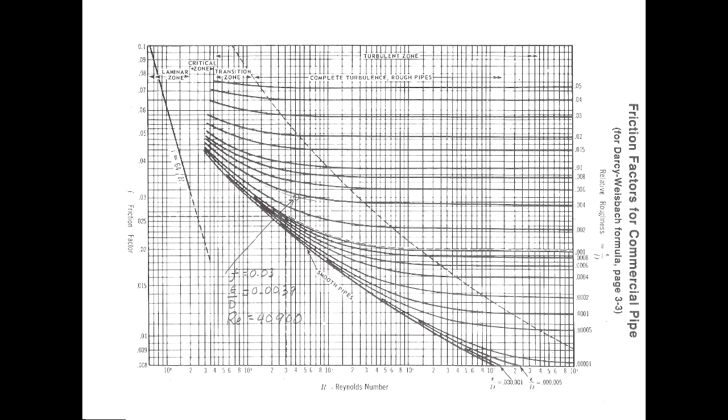At lower Reynolds numbers, the effect of the surface roughness is less, and the second term is more predominant. This is a smooth pipe zone.